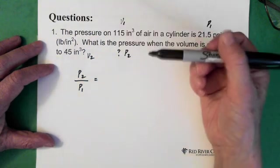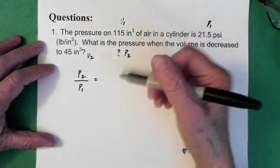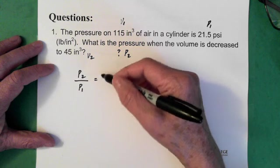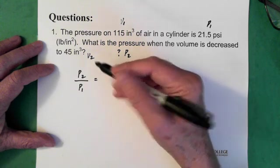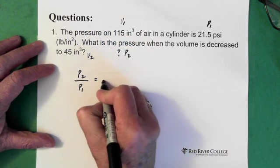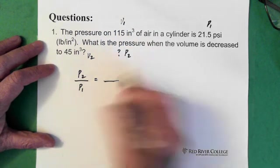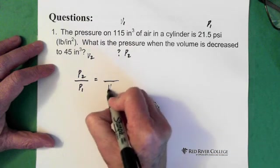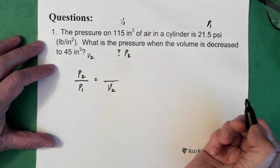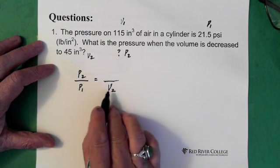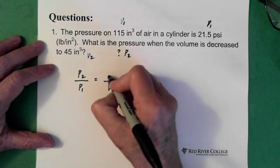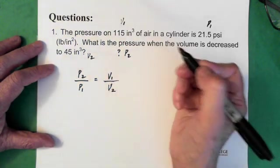And remembering as well from that introduction that, first of all, we know that we want volume on this side. And so if we have pressure 2 up here, then the volume in the denominator has to be volume 2. Alright, so remembering that we're thinking about the inverse piece. And if we have volume 2 down here, then volume 1 is up here.